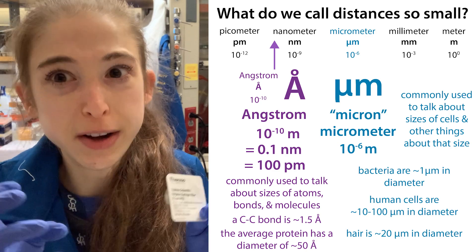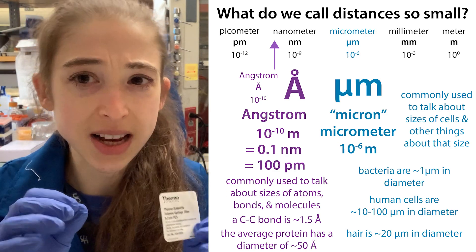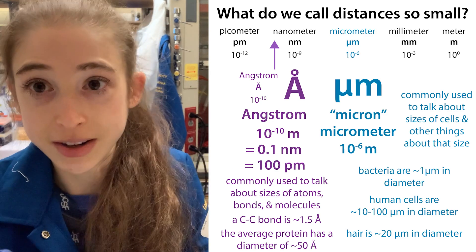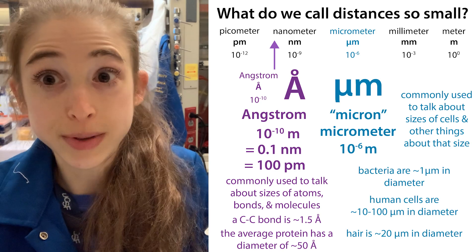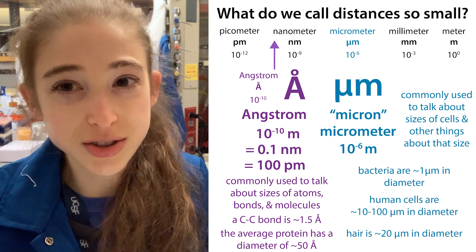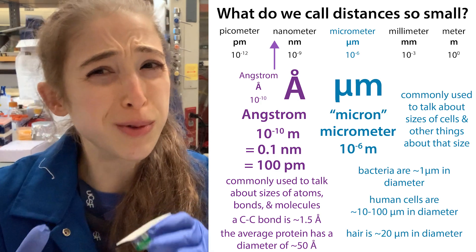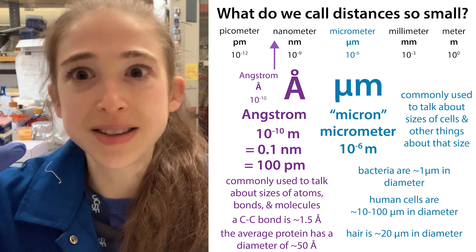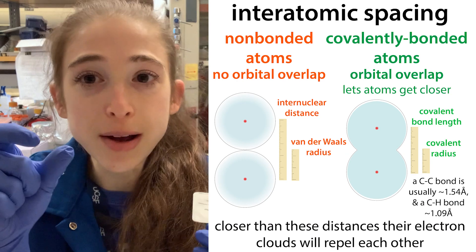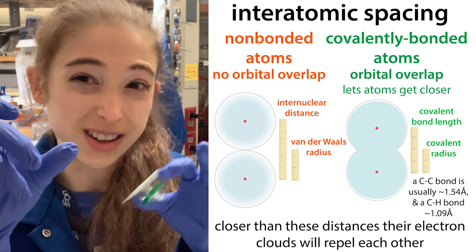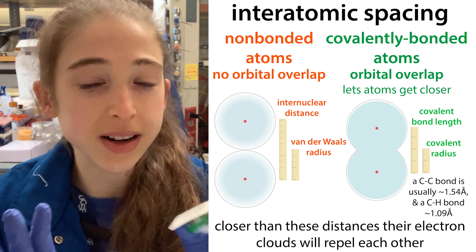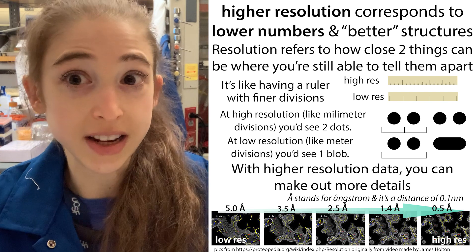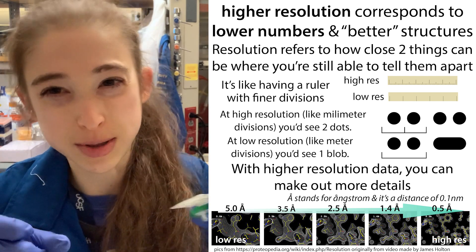A micron is a micrometer, so it is about the size of a bacterial cell, and we can use a 0.2 micron filter to sterilize media. Sometimes we need to talk about even smaller things, and so we have the angstrom. The angstrom is 0.1 nanometers, so it's like 100 picometers, or 10 to the minus 10 meters. Basically, it's about the length of a carbon-hydrogen bond, and a carbon-carbon bond is about 1.5 angstrom.